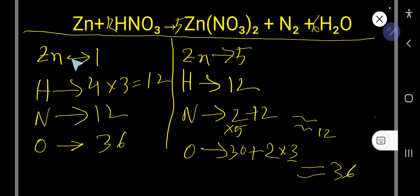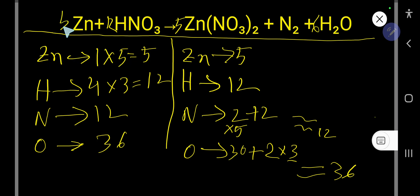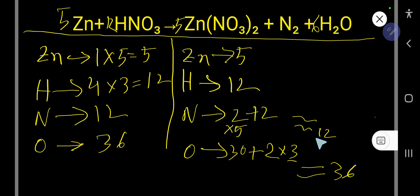To balance zinc, multiply by 5 to give 5. This 5 must come before the zinc on the product side. So now: 5 zinc, 12 nitrogen, 12 hydrogen, 36 oxygen — everything is balanced. This is the balanced chemical equation.